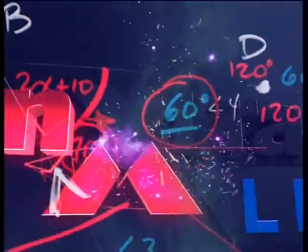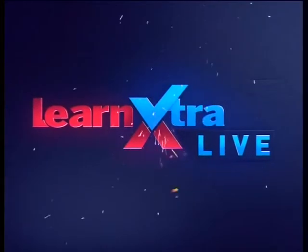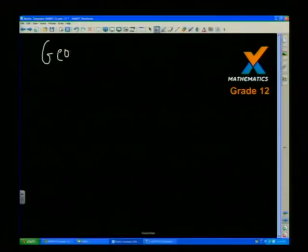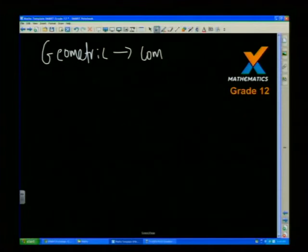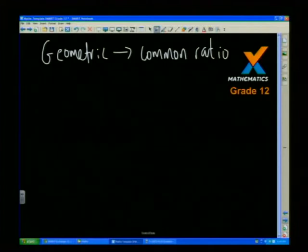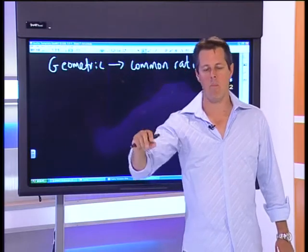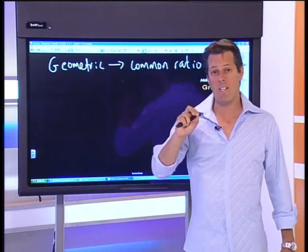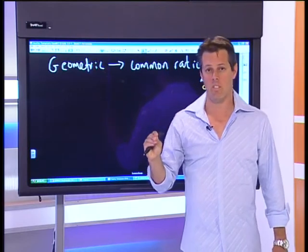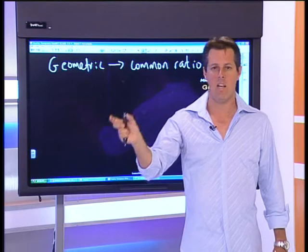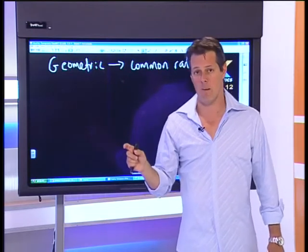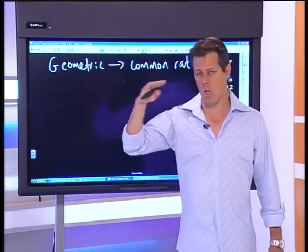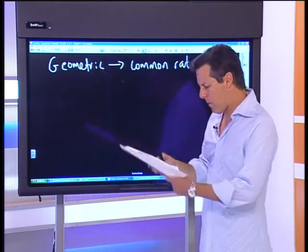Geometric tells us we have a common ratio. Some students asked: what's the difference between quadratic, arithmetic, and geometric? Quadratic means the second difference is constant — you create a first difference row, then a second difference row and it's the same. Arithmetic means the first difference row is constant. Let me give you an example to illustrate.